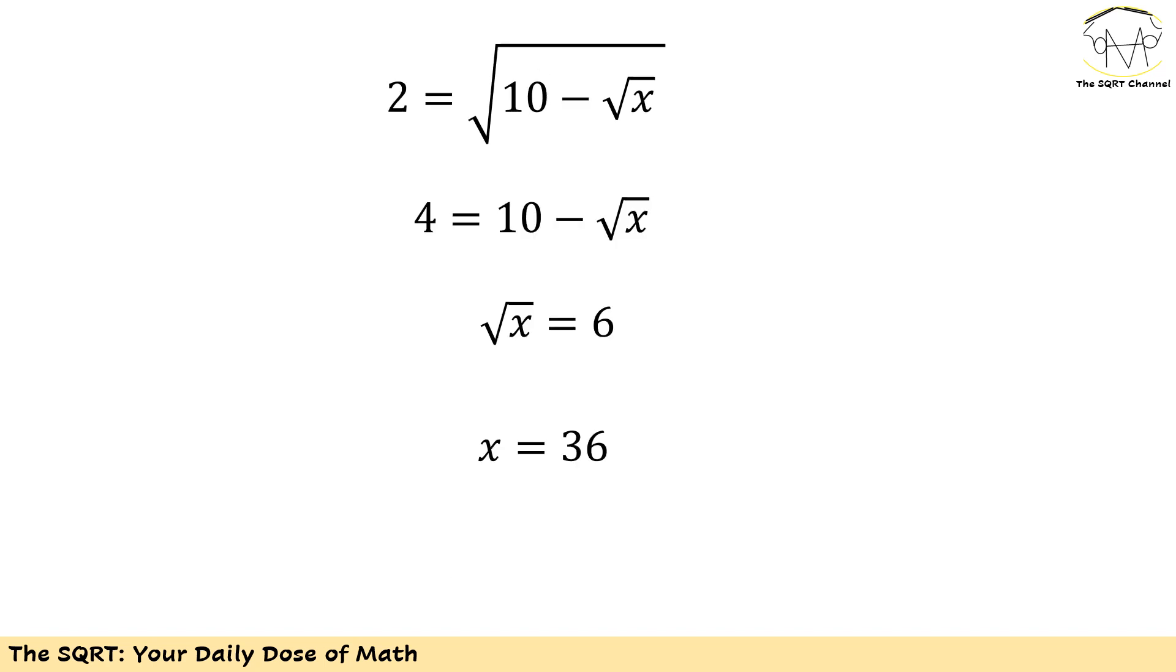Now I have radical 10 minus radical x is 2. Taking power of 2 from both sides I will have 4 equals to 10 minus radical x or radical x is 6 which results in x is basically 36.